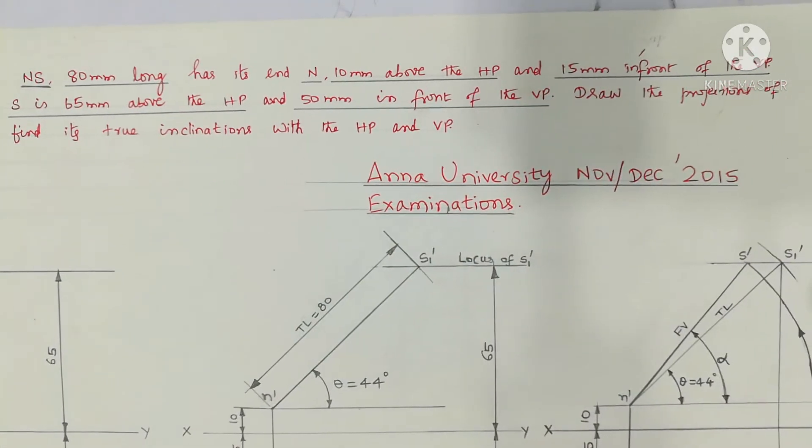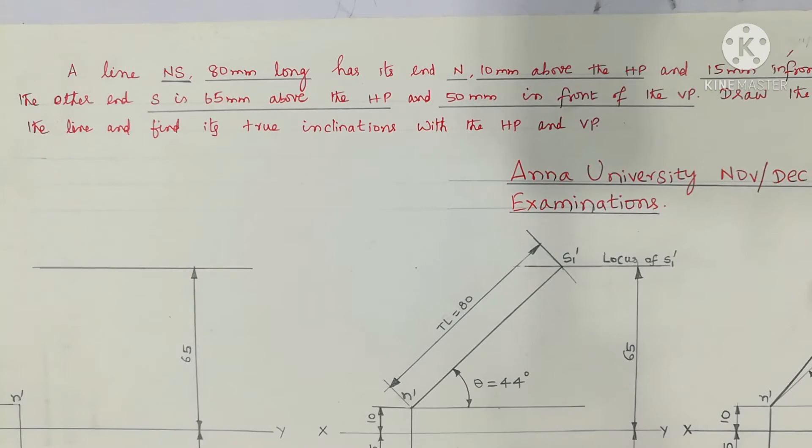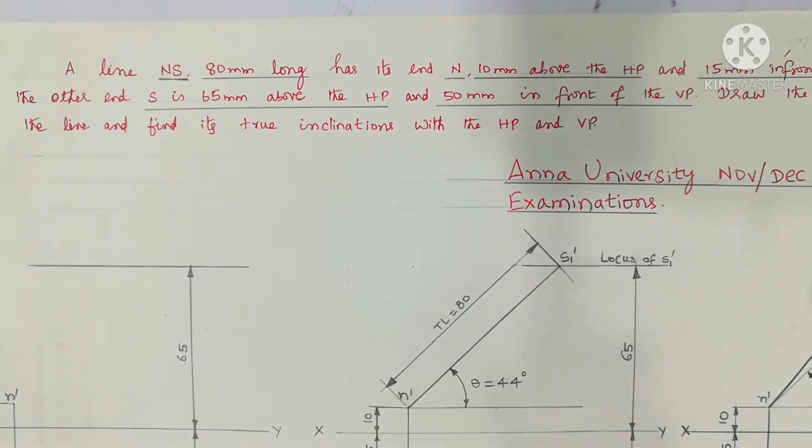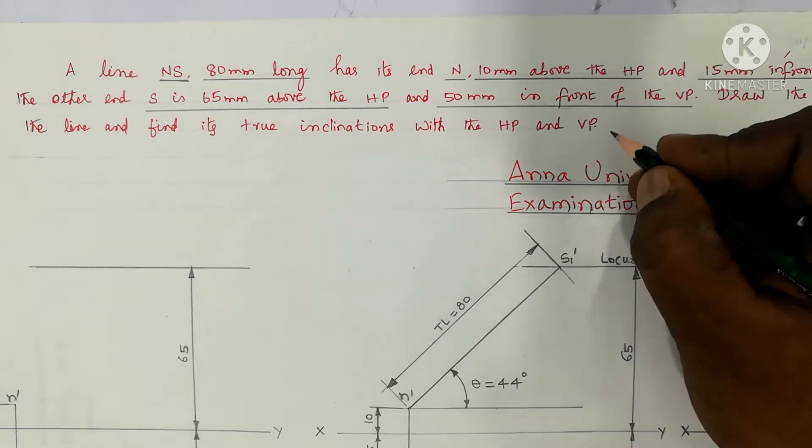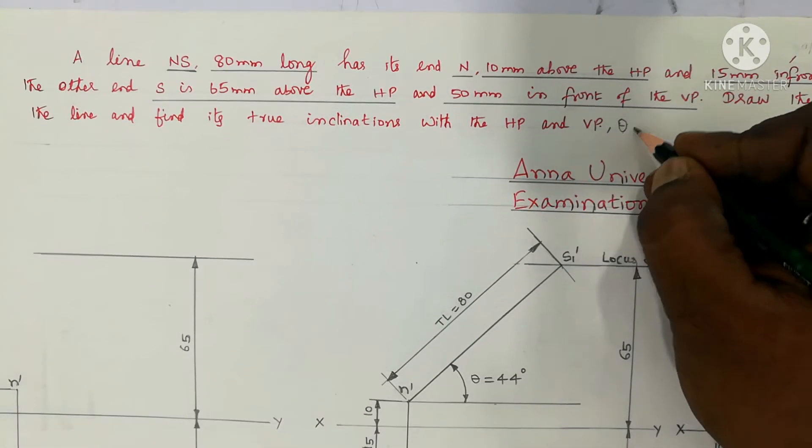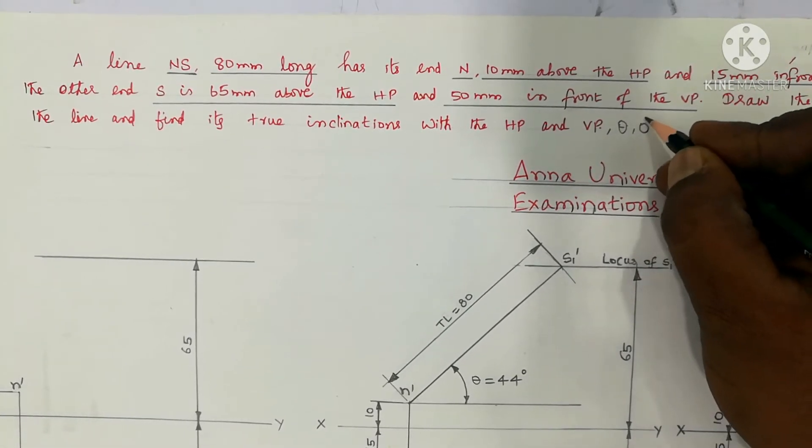Draw the projections of the line and find its true inclinations with the HP and VP. So true inclinations are theta and phi. Theta is inclination with HP and phi is notation for inclination with VP.